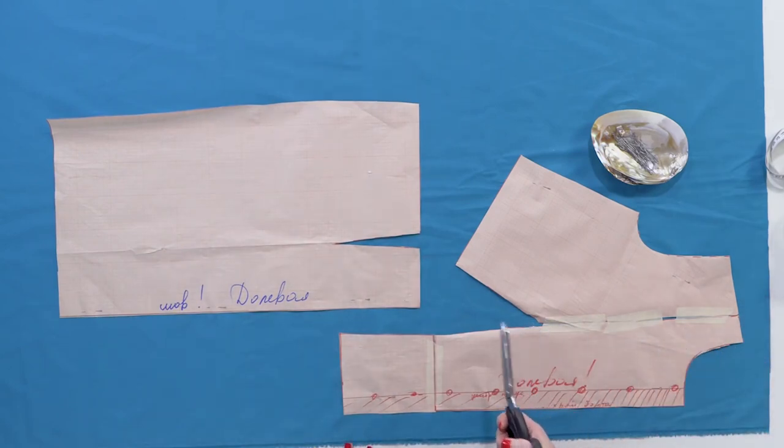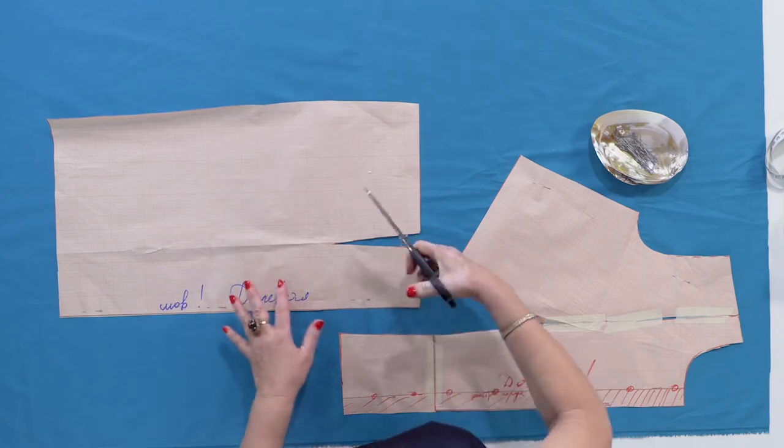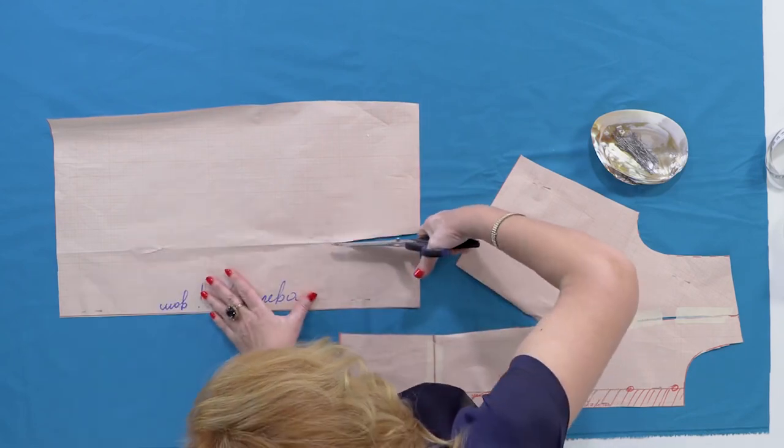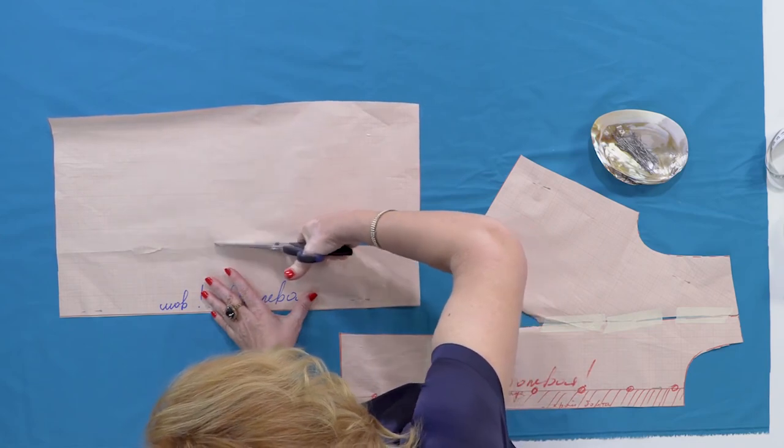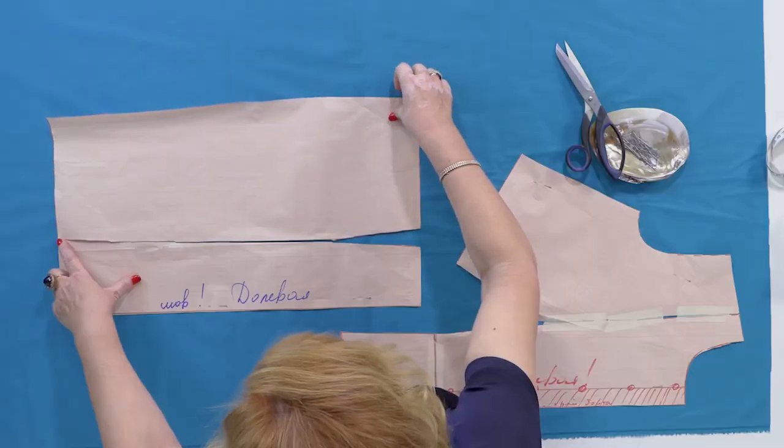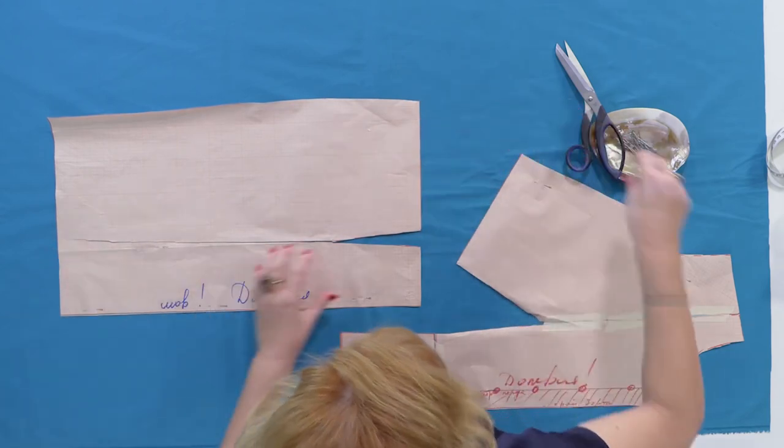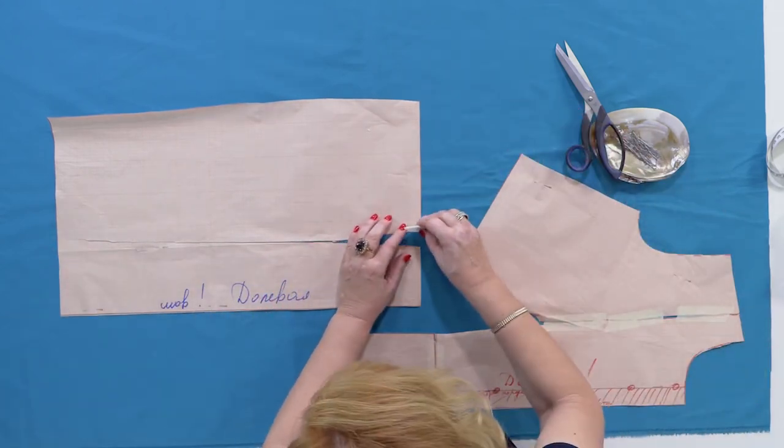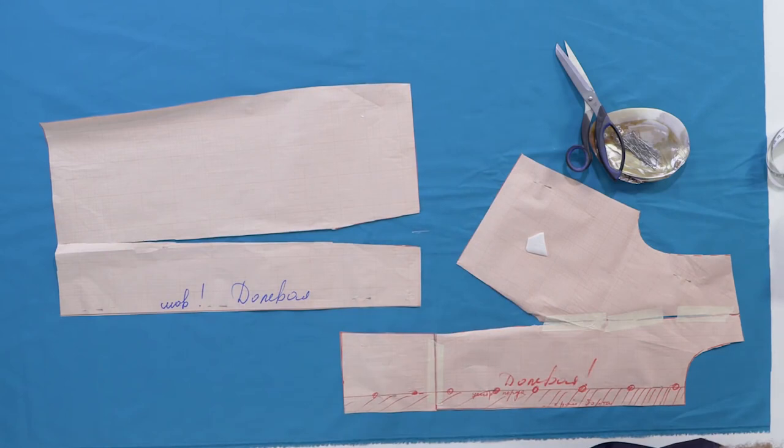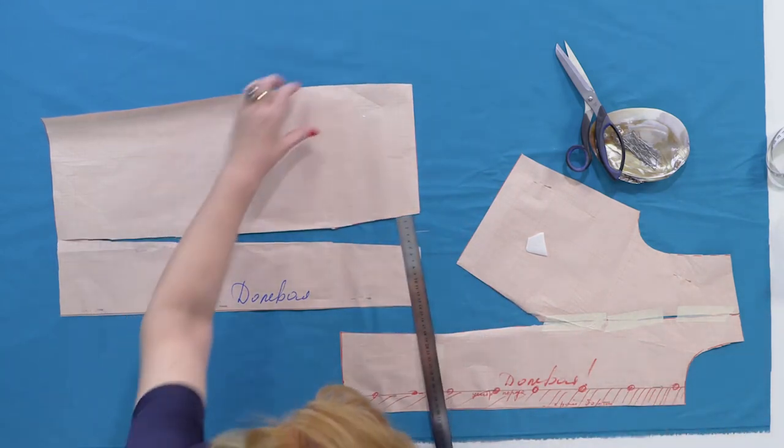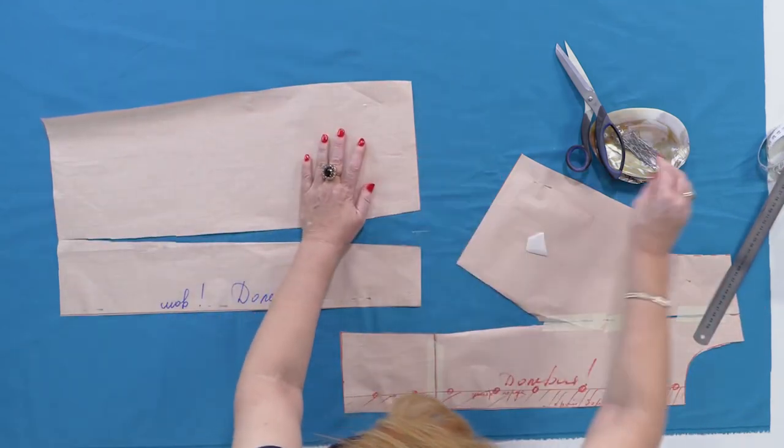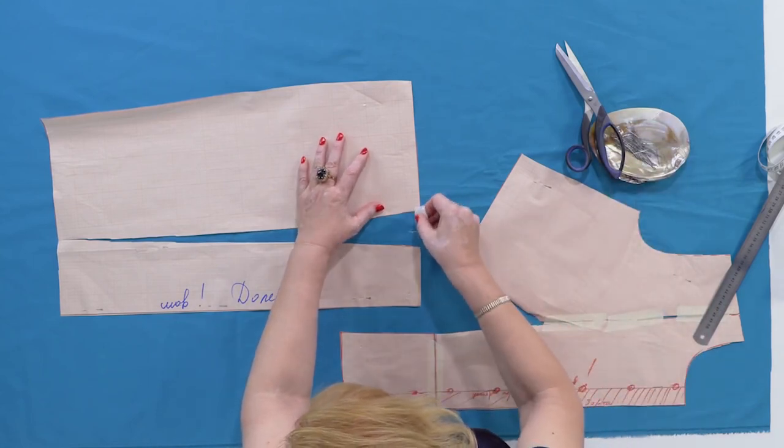Do not forget that there should be a seam on the center front in the skirt as well. This is the waist tuck. To make a pin tuck here, I need to extend the width of the upper part of the skirt by 3 or 4 cm. I'm going to make a small pin tuck here.